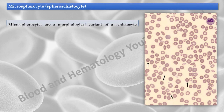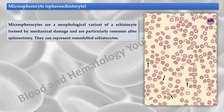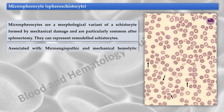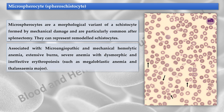Microspherocytes are a morphological variant of a schistocyte, formed by mechanical damage and are particularly common after splenectomy. They can represent remodeled schistocytes. Microspherocytes are associated with microangiopathic and mechanical hemolytic anemia, extensive burns, and severe anemia with dysmorphic and ineffective erythropoiesis.